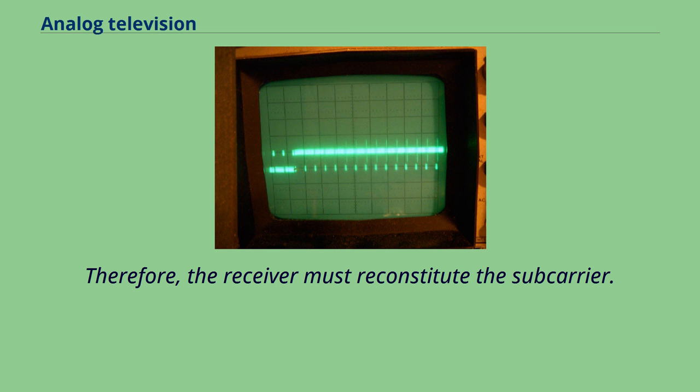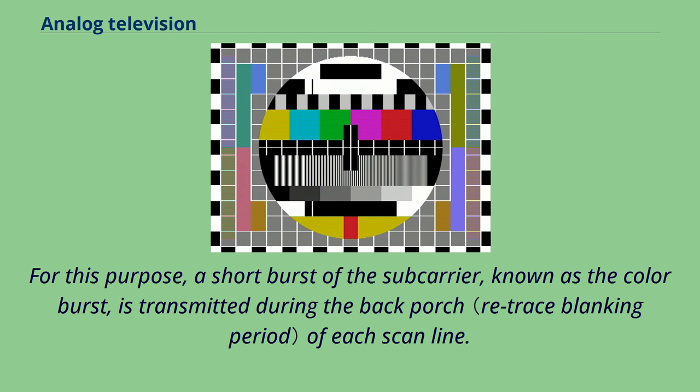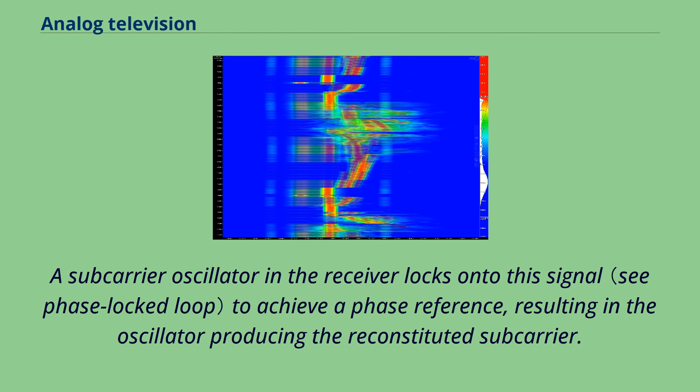A second use of the burst in more expensive or newer receiver models is a reference to an AGC system to compensate for chroma gain imperfections.